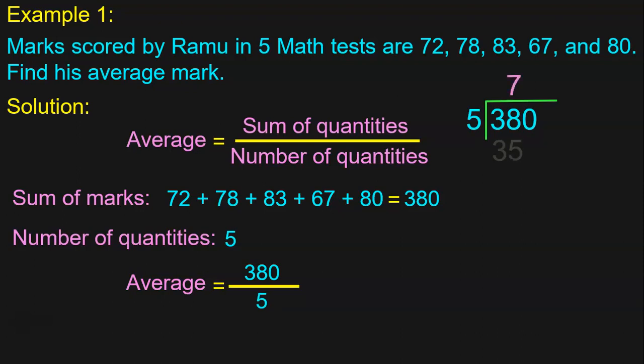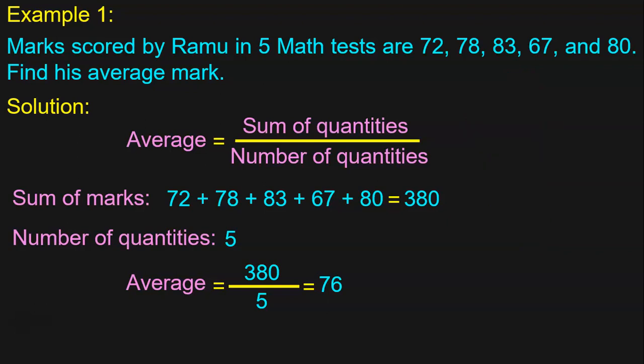5 into 7 is 35, remainder is 3. Bring down the next digit 0. 30 divided by 5 — 5 into 6 is 30. 30 minus 30 is 0. In division, the quotient is the answer. So 380 divided by 5 gives you 76. The average of the 5 math test marks of Ramu is 76. Ramu's average mark is 76.